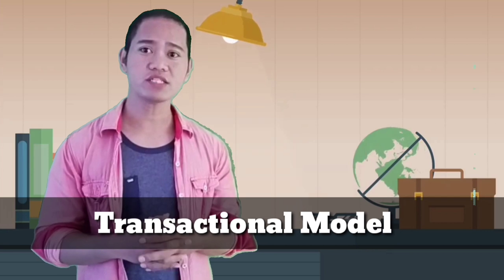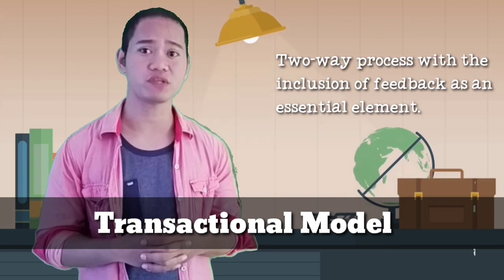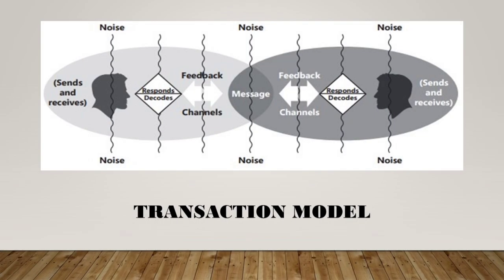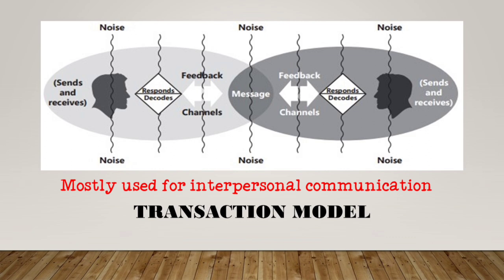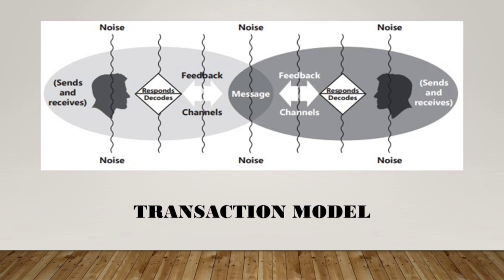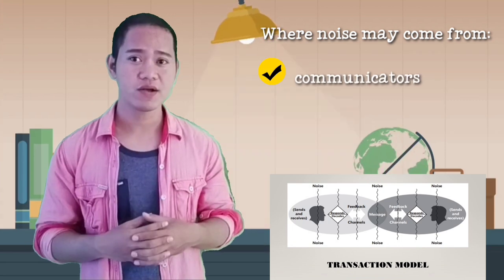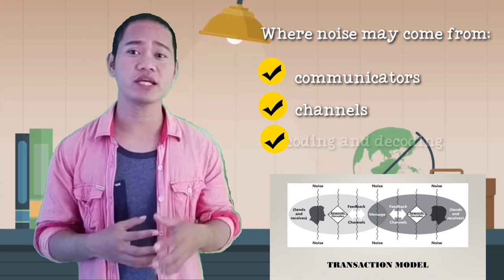The fourth model of communication is the transactional model, and as the name suggests, this model is a two-way process with the inclusion of feedback as an essential element. As shown in the figure, this model is more interactive. Hence, it is mostly used for interpersonal communication. There is a collaborative exchange of messages between communicators with the aim of understanding each other. It also shows that a barrier, such as noise, may interfere with the flow of communication. Delving deeper on the concept of noise as illustrated in this model, noise may come from the communicators themselves, from the channels, and even from the way they encode and decode the message.